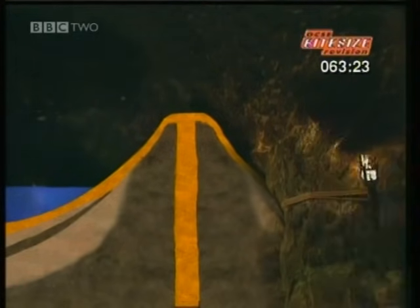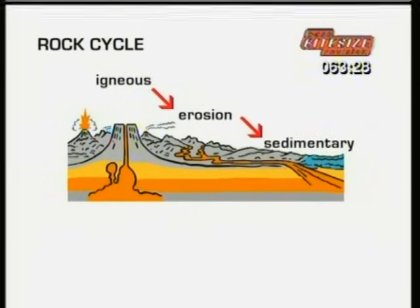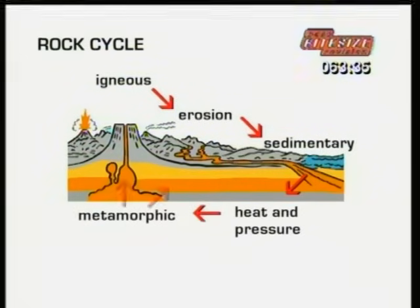So over millions of years, igneous rocks are eroded and weathered, transported and deposited to become sedimentary rocks, which under heat and pressure can become metamorphic rocks. Metamorphic rocks can either erupt back to the surface as igneous rocks, or be exposed or lifted to the surface by movements of the Earth's crust to complete the cycle.